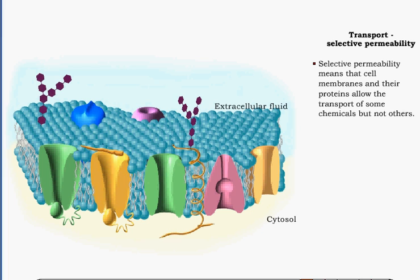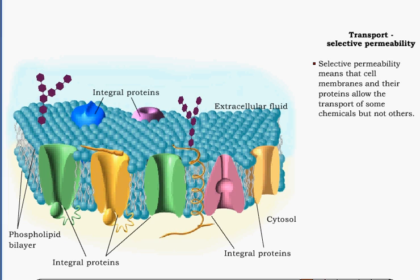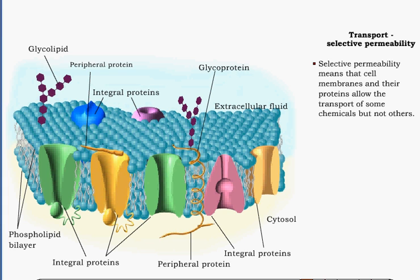The membrane acts as a barrier to transport of chemicals into or out of the cell. It may be permeable to one chemical, allowing it to exit or enter the cell, and impermeable to another. This characteristic of membranes is known as selective permeability.